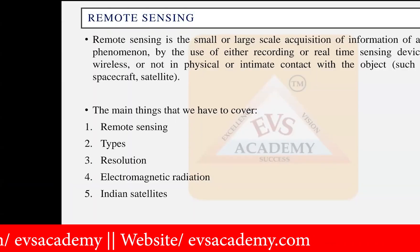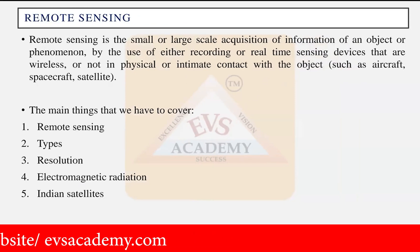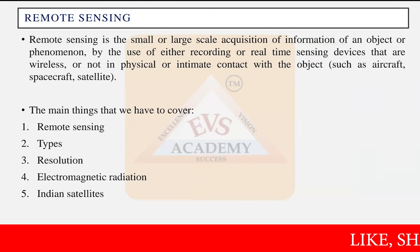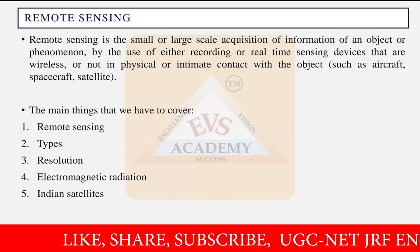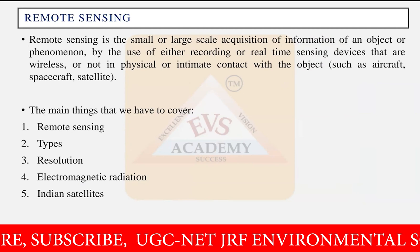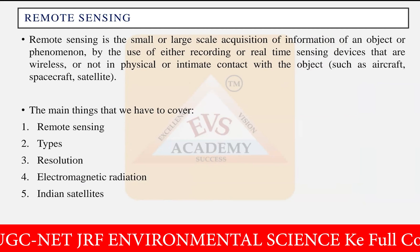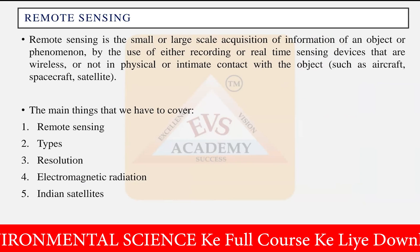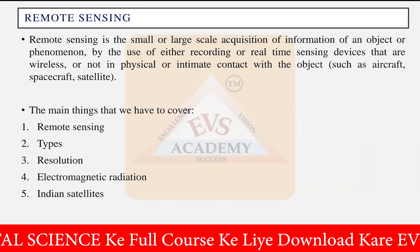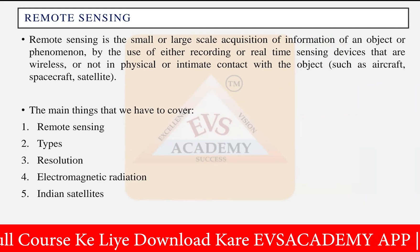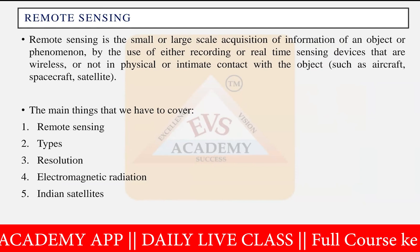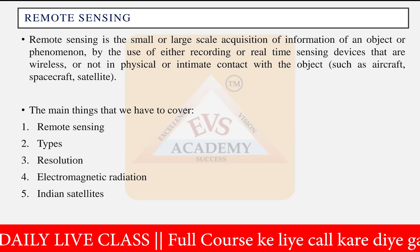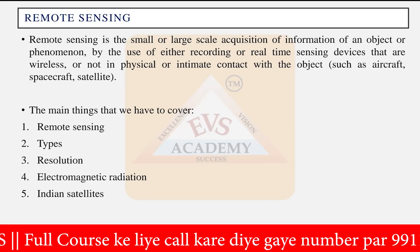What is remote sensing? Literally, remote sensing means controlling or getting information from anything that is far apart from you. The actual meaning of remote sensing, as we use it today, refers to the small or large scale acquisition of information of an object or phenomenon from a distance.